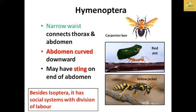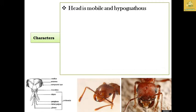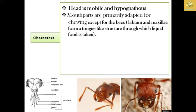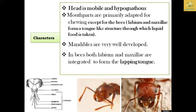Regarding characteristics of Hymenoptera: the head is mobile and hypognathous. The mouthparts are primarily adapted for chewing, except in bees where the labium and maxillium are formed as a trunk-type structure for taking food. The mandibles are well developed, and in bees both the labium and maxillae are integrated to form a lapping-type structure.